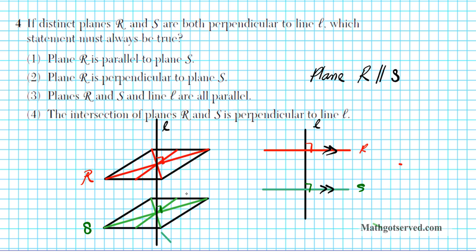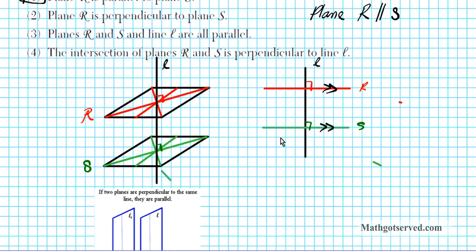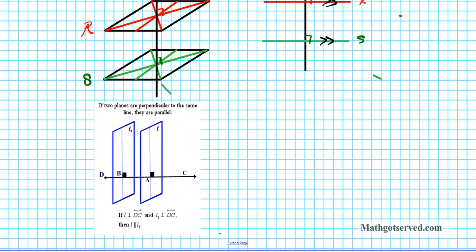The conclusion is that plane r is parallel to plane s. This is consistent with the theorem on the Regents Prep website: if two planes are both perpendicular to the same line, they are parallel. So our answer is option number 1.